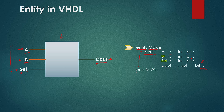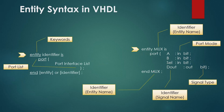Finally we finish our entity by using the END statement followed by the name of the entity and then a semicolon — so it is END mux and then semicolon. And that's it for the entity of our first digital system.